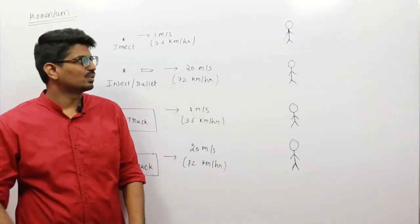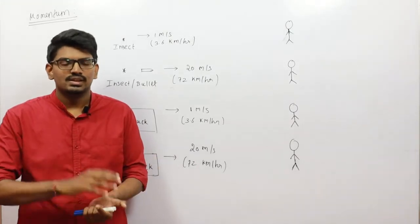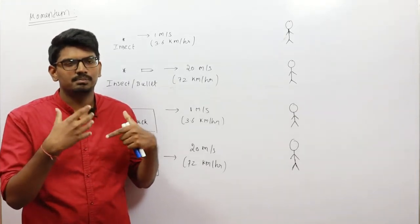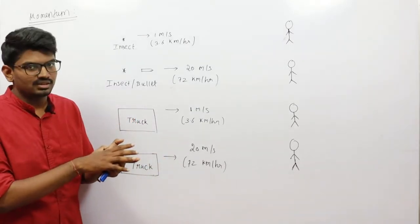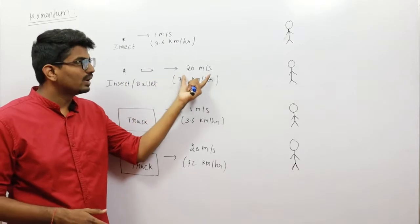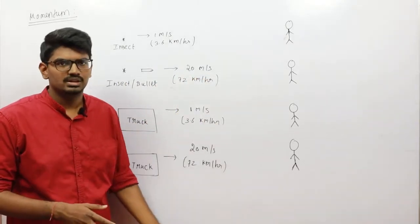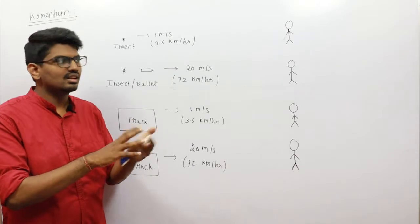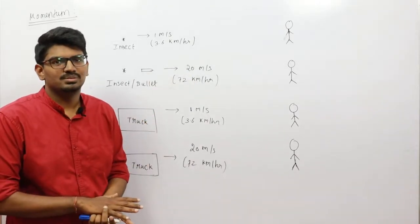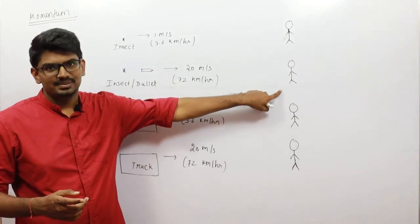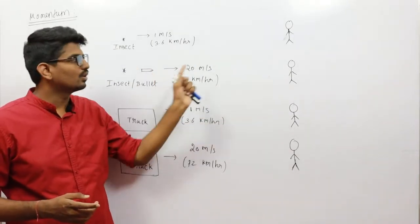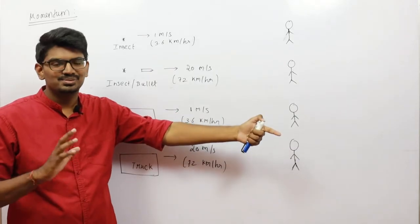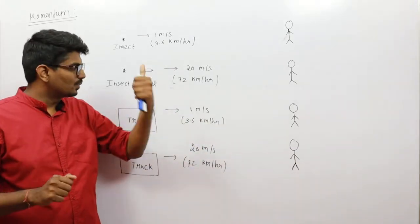Now consider the same scenario, but instead of an insect, take a bullet of the same size moving at 20 meters per second — approximately 72 kilometers per hour. The person is standing there and the bullet hits him. Obviously the effect is going to be very high now.